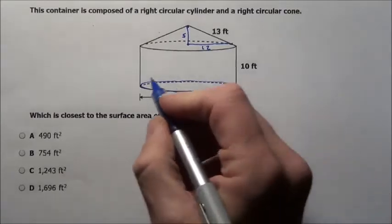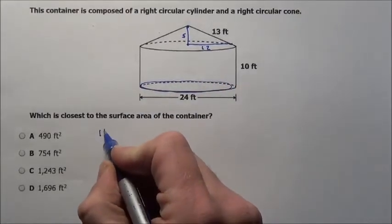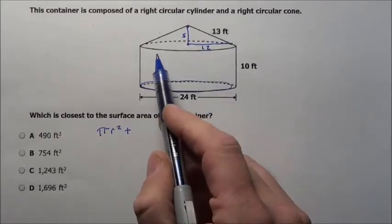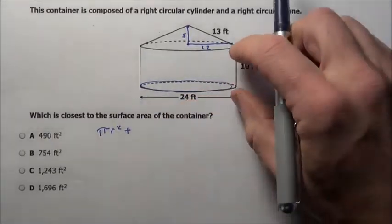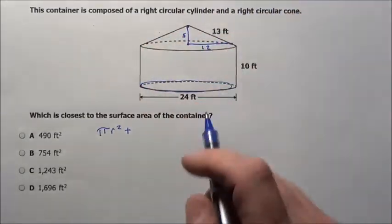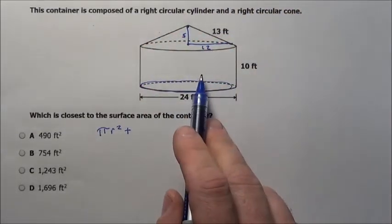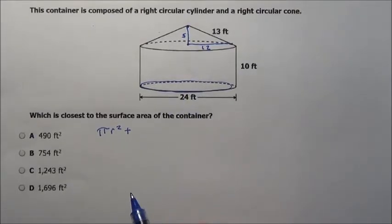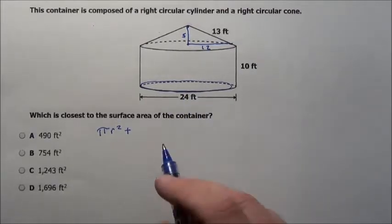So that's going to be pi times the radius squared plus we have this part around right here. That's the lateral area of that cylinder that we have.